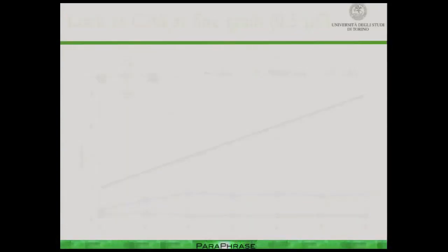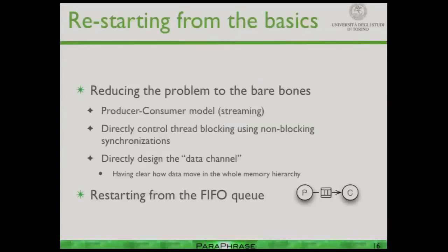Memory coherence is the real problem — GPU builders know this well because they simply didn't put any coherency in. What we did over the last two years is rethink from the very basics what we can do for data, at least on multicore. We restarted from basic programming models: producer-consumer, mutual exclusion — really basic mechanisms — restarting from the FIFO queue.